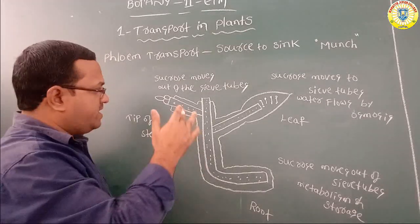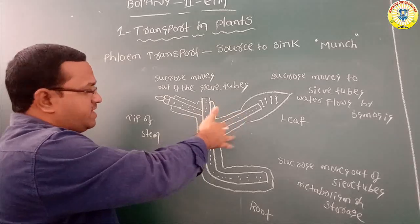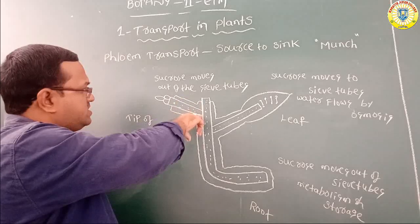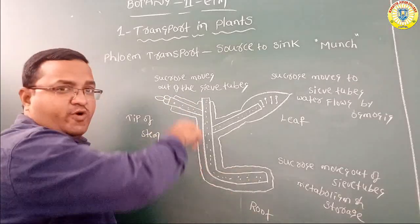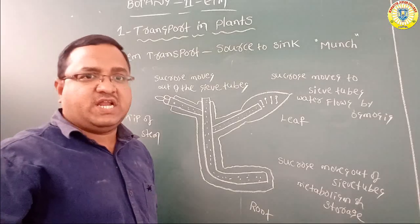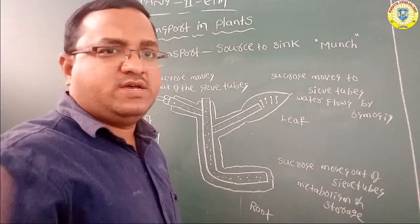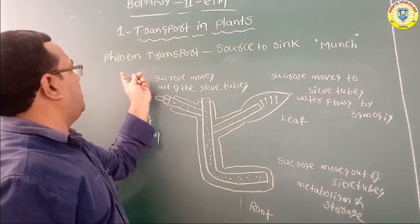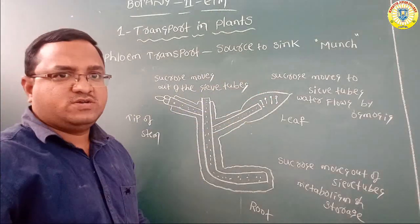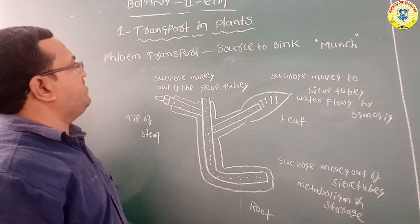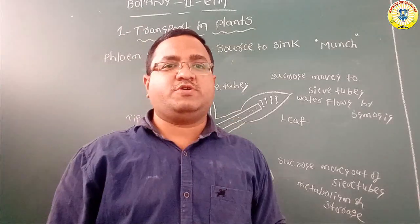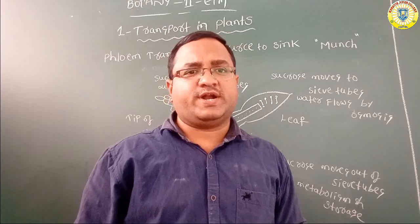The phloem transports the synthesized food in upward and downward directions — to stem regions and root regions — so this is called bi-directional movement. This is about phloem transporting food from source to sink. Today we completed the first chapter. Tomorrow we are going to start the second chapter. Thank you, children.